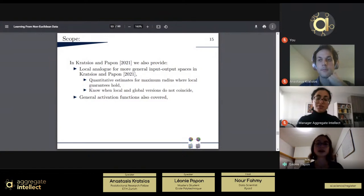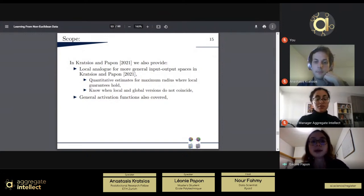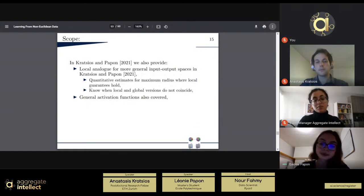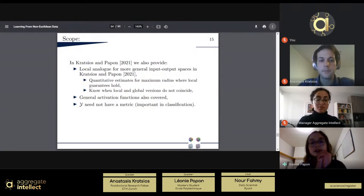So, in the examples that we presented today, we assumed that the activation function sigma was infinitely differentiable and non-polynomial, but actually, our paper covers a broader class of activation functions, and more precisely, they cover all activation functions that are considered in the theorem of Kiger and Lyons that we have mentioned in the introduction. And also, the output space, need not have a metric, and this may be important in classification.